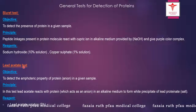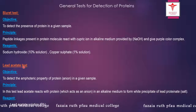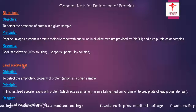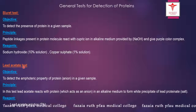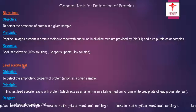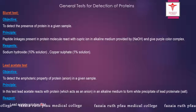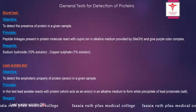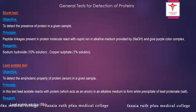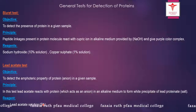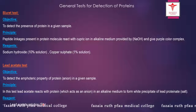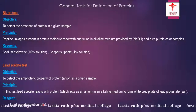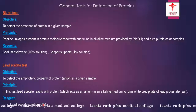Next comes the lead acetate test. This test confirms the presence of proteins, specifically detecting their amphoteric property — that is, when the protein is acting as an anion. Lead acetate is the main reagent. Lead acetate reacts with protein acting as an anion in an alkaline medium to form a white precipitate of lead proteinate salt.